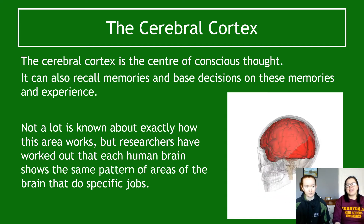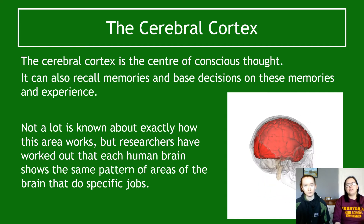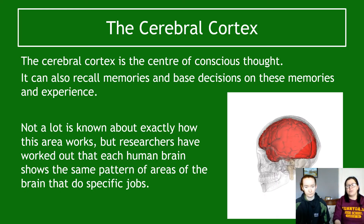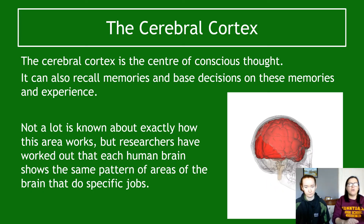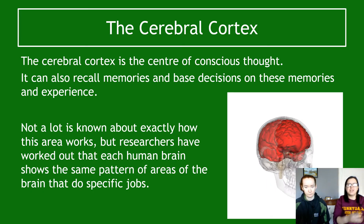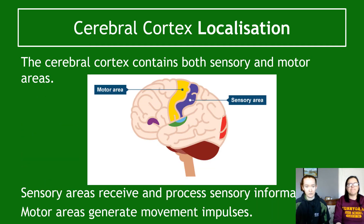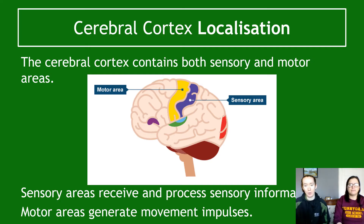Not a lot is known about exactly how the area works, but researchers have worked out that each human brain shows similar or the same patterns of areas that do specific jobs. So when we look at human brains, we all have areas in common. Looking at the idea of cerebral cortex localization — basically the idea that certain regions of the brain have a similar job across individuals — they're kind of localized to that job.